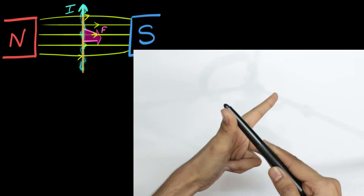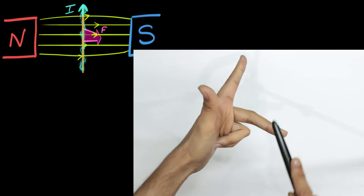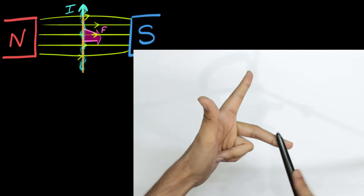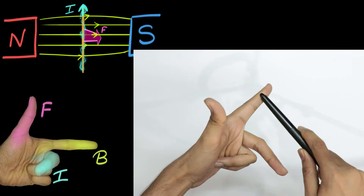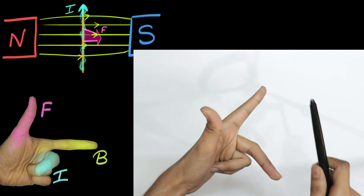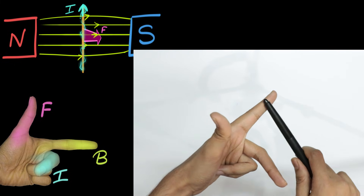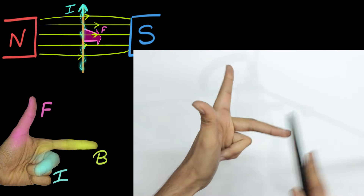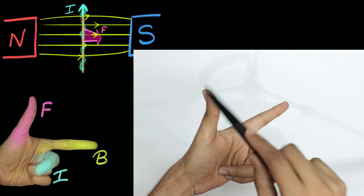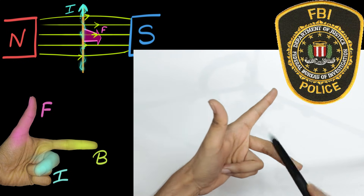So: force, magnetic field, and current. For force we use F, for magnetic field we use B — note the symbol for magnetic field is B, not M — and for current we use I. The way to remember this is FBI. So the middle finger is current I, the forefinger is field B, and the thumb is force F.